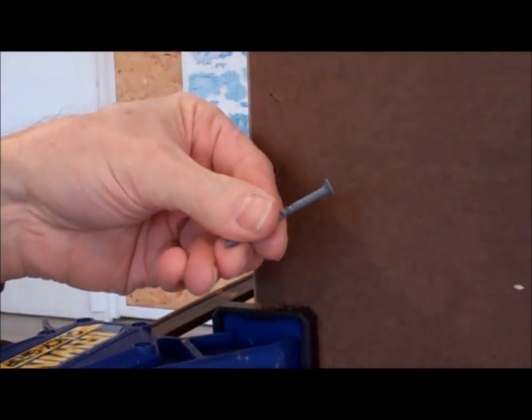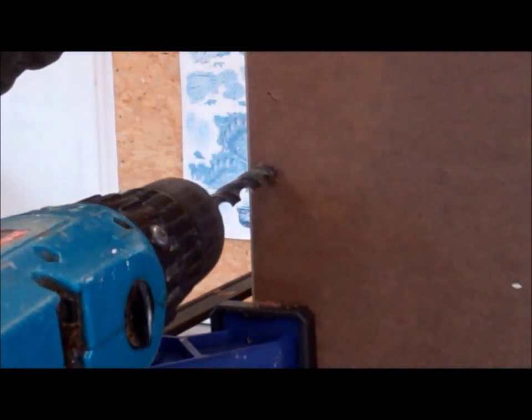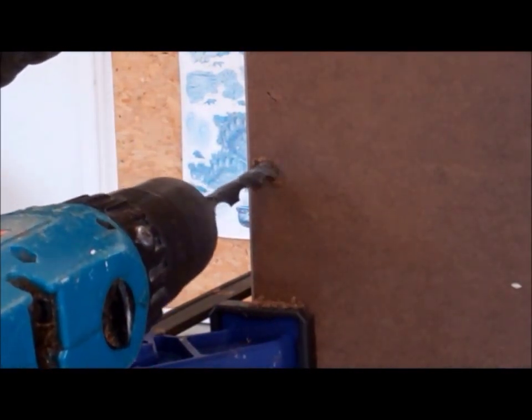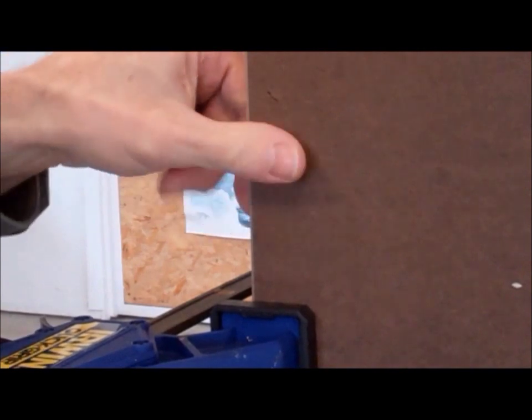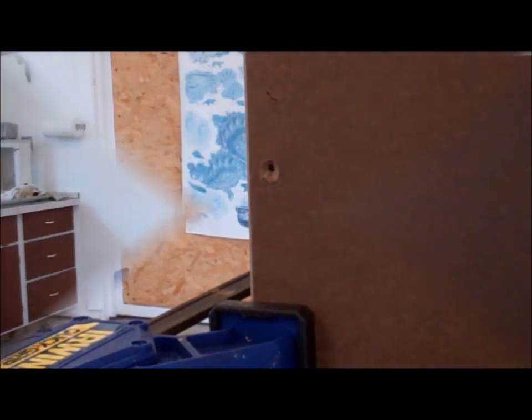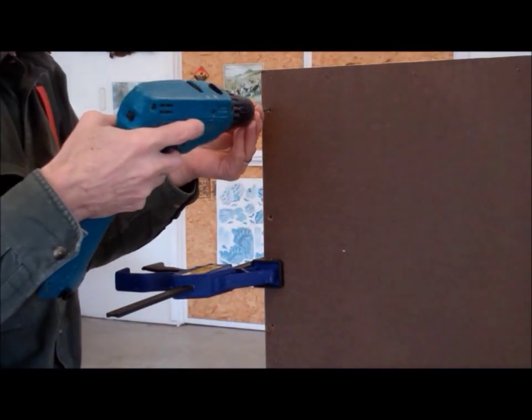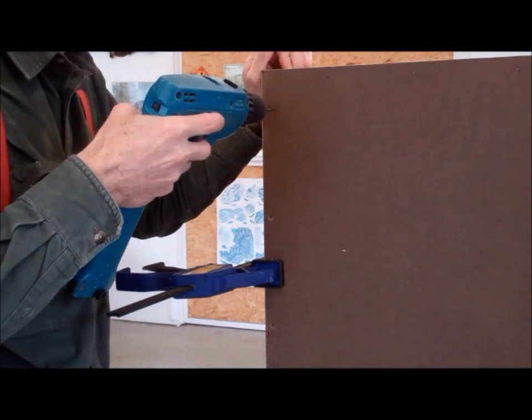To screw the panels together I'm using a 2 inch bugle headed screw. I am going to countersink the pilot holes so the head of the screw will be flush with the panel. Once all the pilot holes are drilled and countersunk, it is just a simple matter of screwing the four sides together.